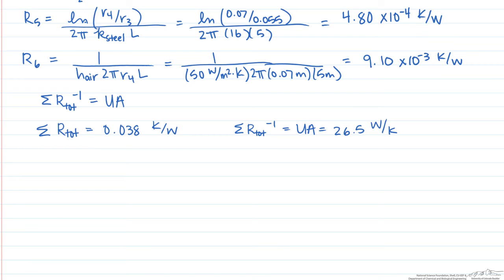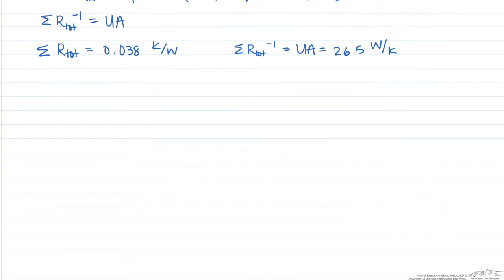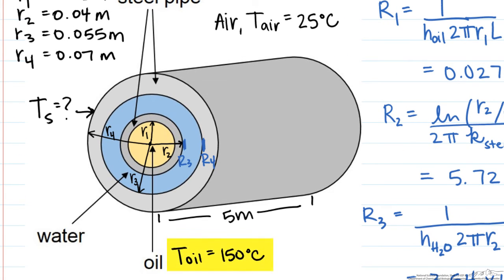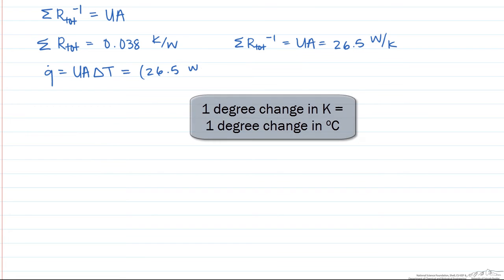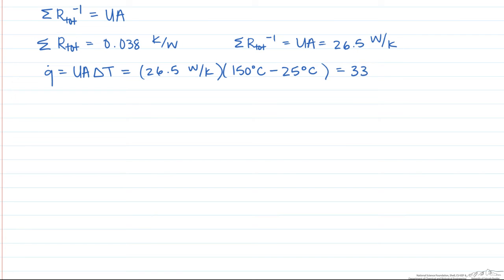Now we can use this to find our Q. Our Q is equal to UA times the difference in temperature where the resistances occur. We calculated resistances from the inside of the oil — where that temperature was 150 degrees C — all the way to the outside, where that temperature is 25 degrees C. So Q is going to equal 26.5 watts per Kelvin times 125 K, giving us Q equal to 3,313 watts.